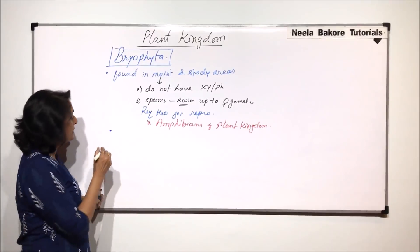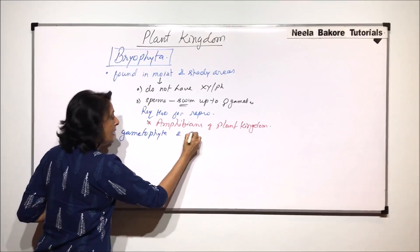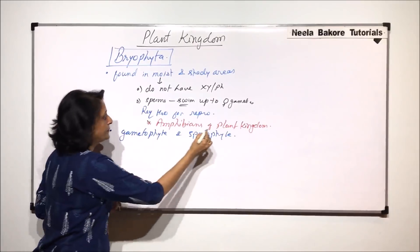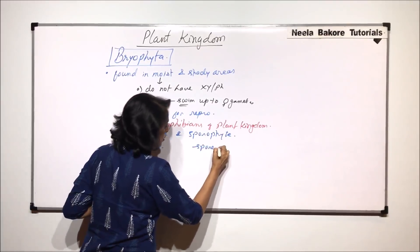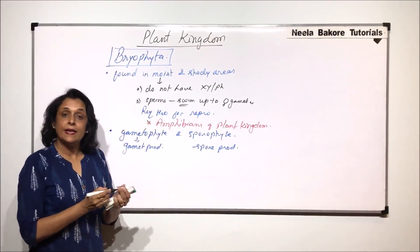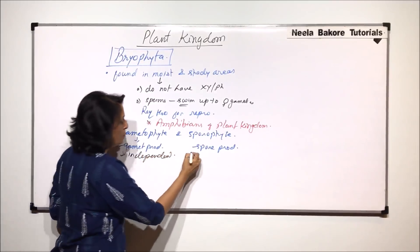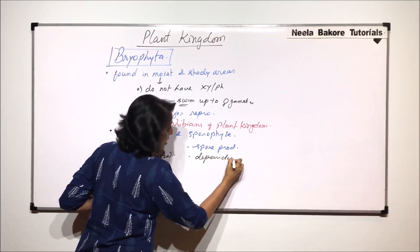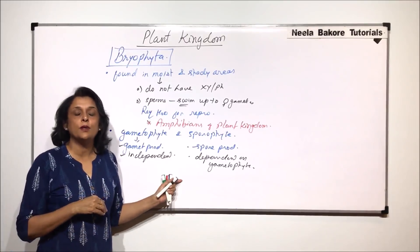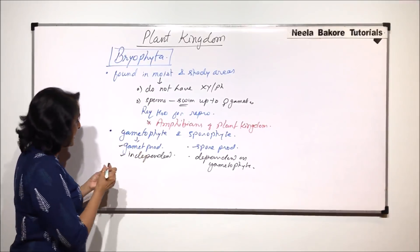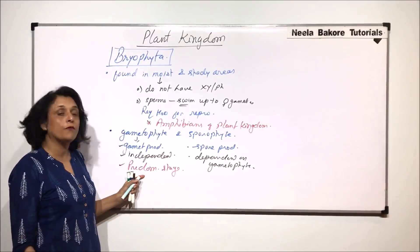The next important thing about them is that they have alternation of generation. There is a gametophyte stage and a sporophyte stage. The gametophyte stage is the gamete-producing stage and the sporophyte is the spore-producing stage, and these two alternate with each other. Importantly, the gametophyte stage is independent, whereas the sporophyte stage is dependent on the gametophyte. The sporophyte always grows on the gametophyte, drawing its nourishment from it, and the gametophyte is the predominant stage.